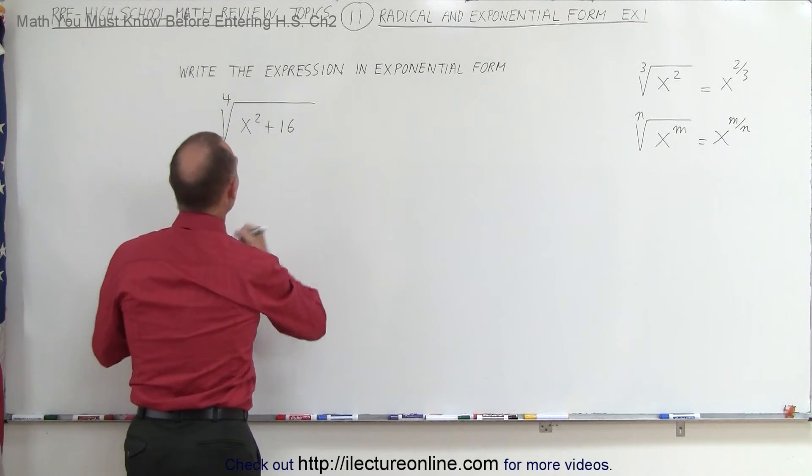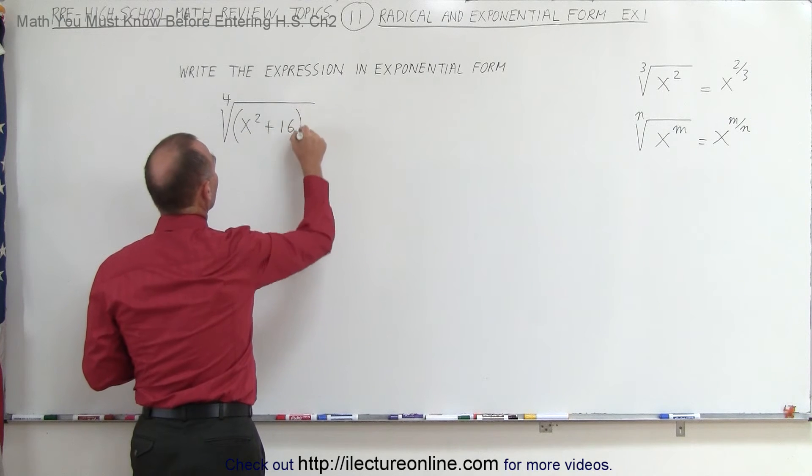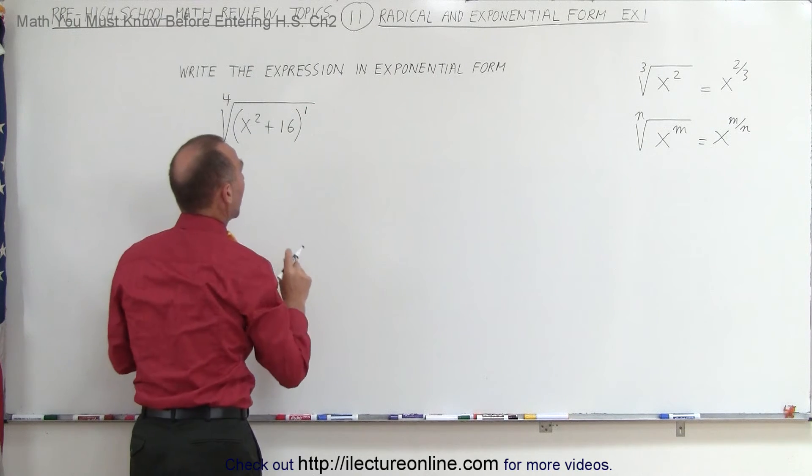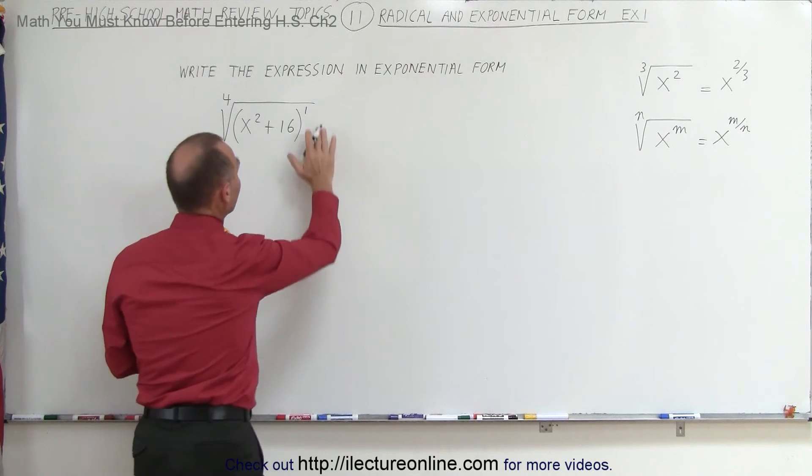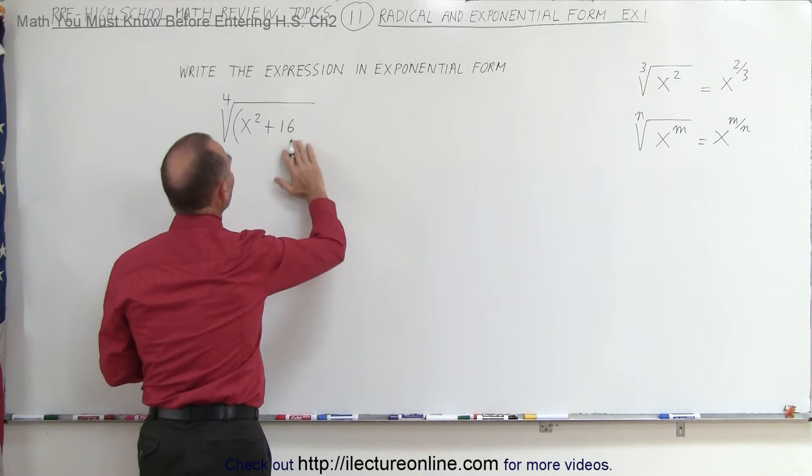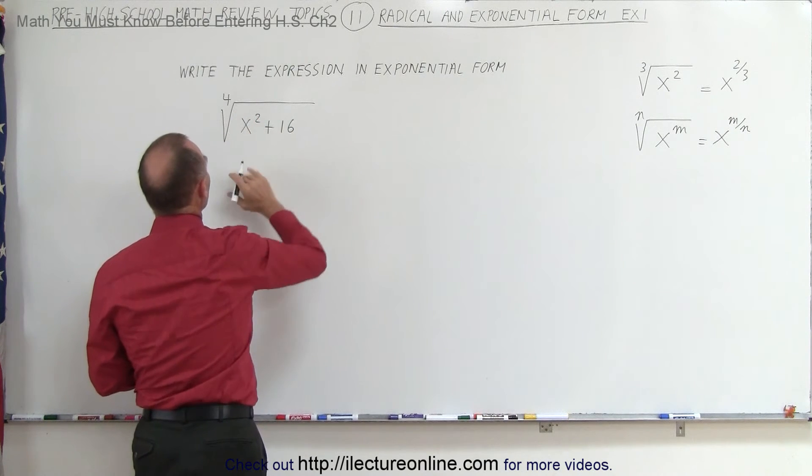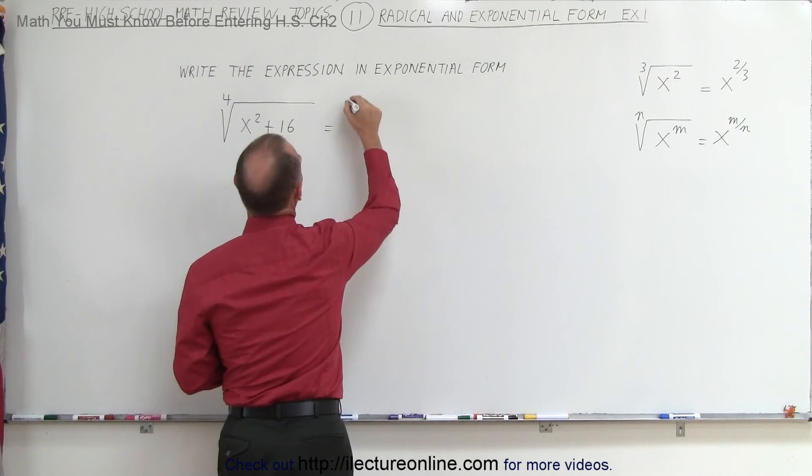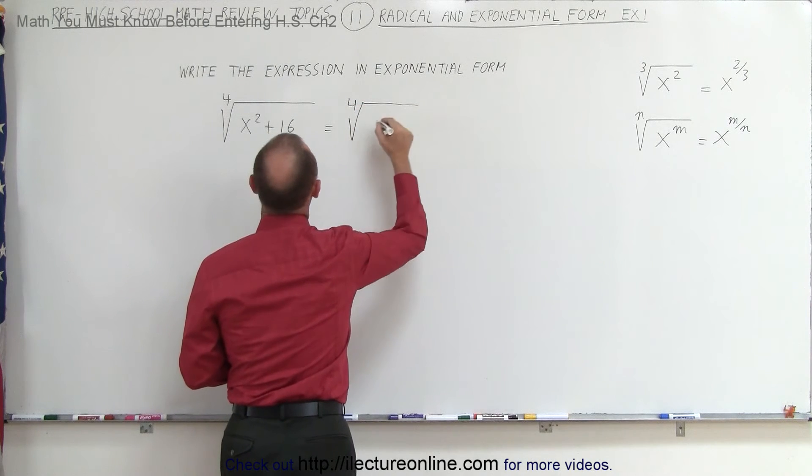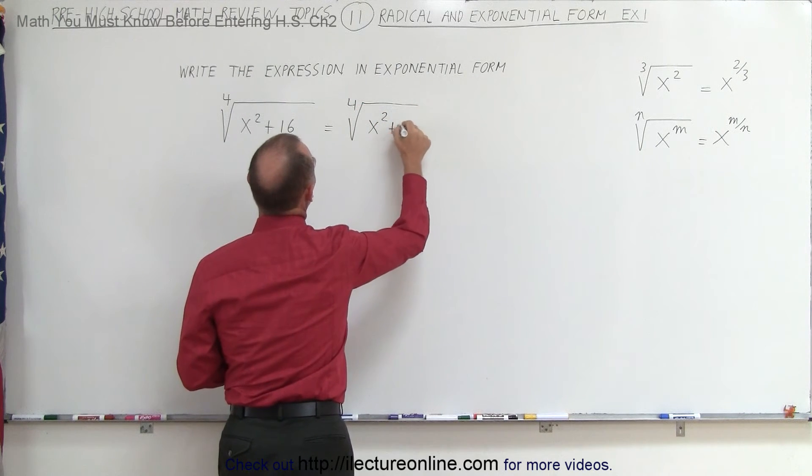Now when you look at this, you can imagine that this here inside the radical is written to the first power. Even though it wasn't there, you can imagine it to be like that. So let's write it separately like this. We can say this is the fourth root of the quantity x squared plus 16.